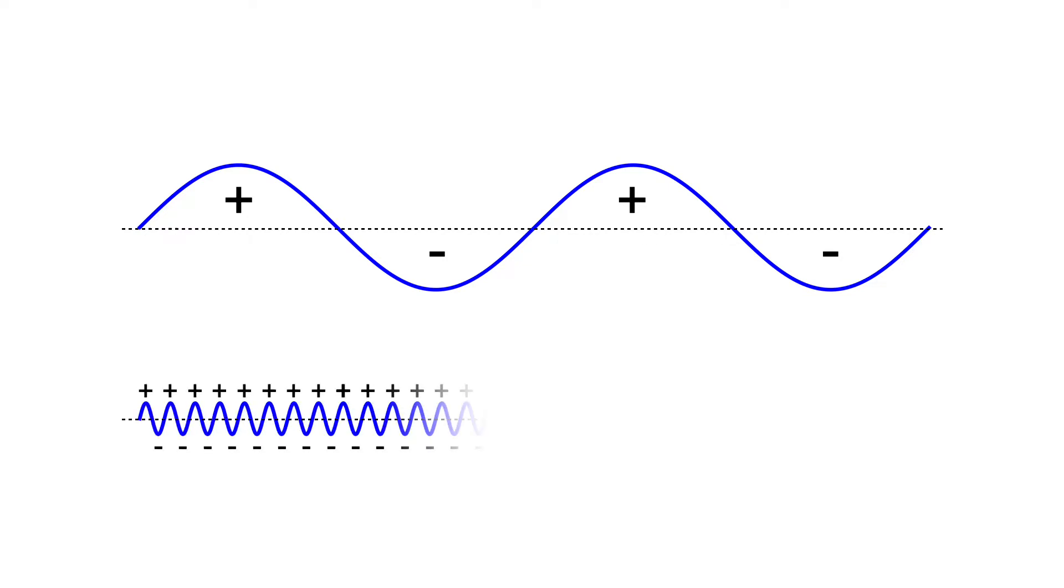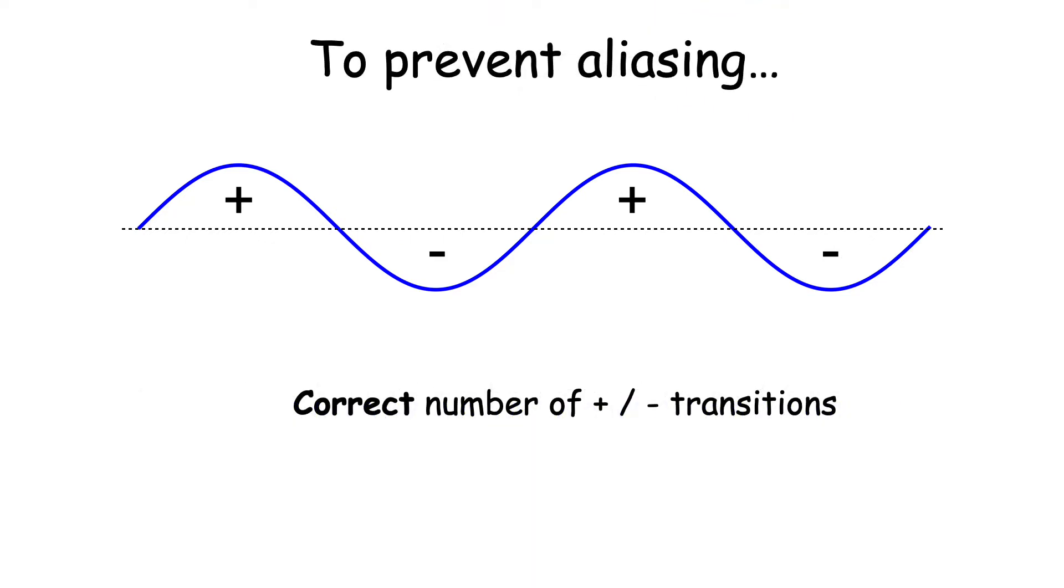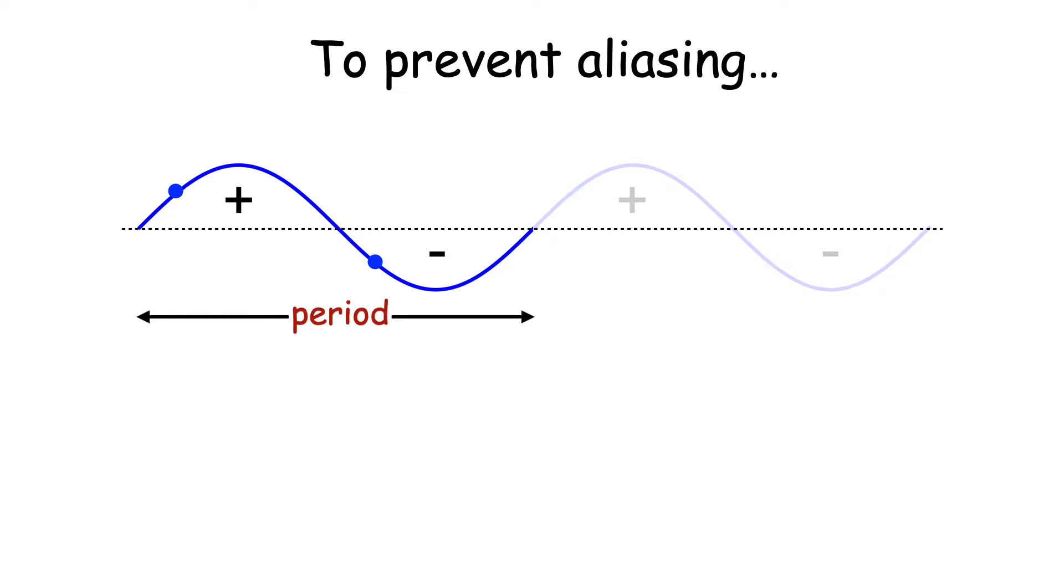You can think of a sine wave as a positive lobe followed by a negative lobe, and so on, oscillating between positive and negative values. Now this sine wave oscillates more frequently. The frequency of oscillations is what differentiates one sine wave from another. To prevent aliasing, your reconstruction should have the correct number of positive to negative transitions. This means you should sample at least once in each positive and negative lobe. Another way of saying this is that you should have at least two samples per period.